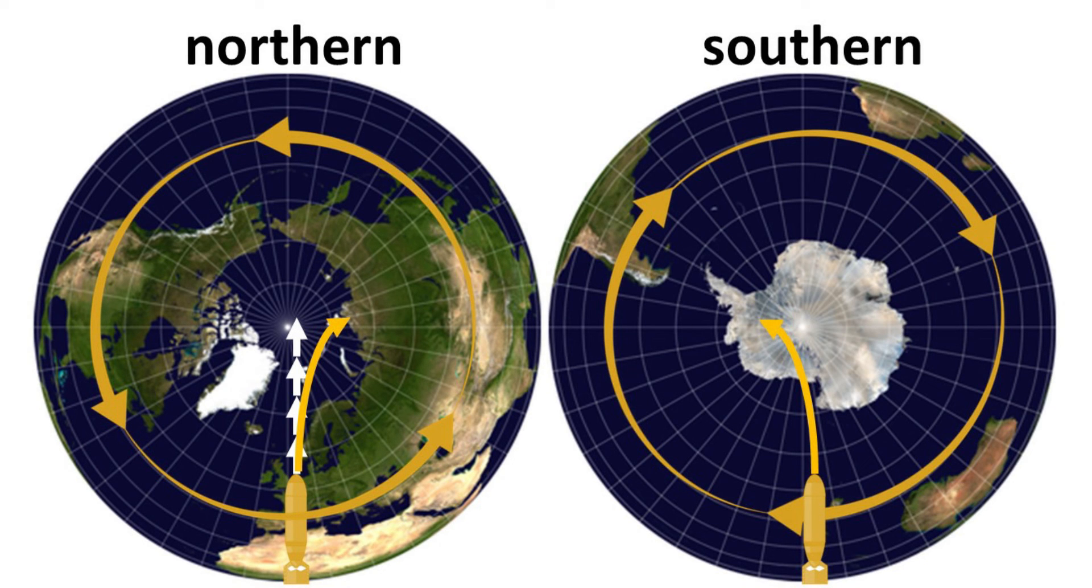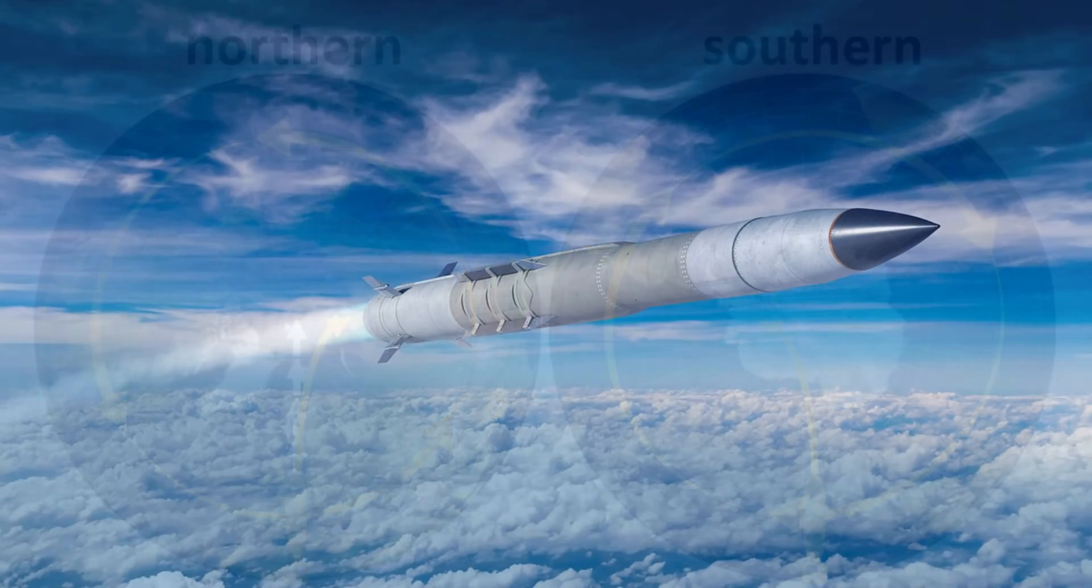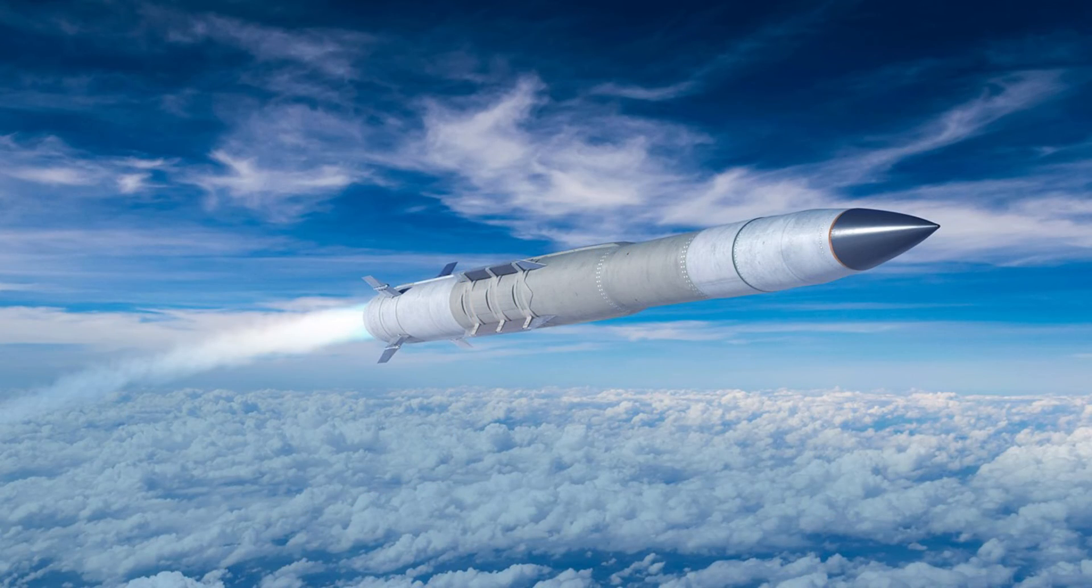For the southern hemisphere, since the Earth's rotation is clockwise, the deflection of the projectile fired towards the south pole will be to the left instead. Thus, for long-range missile systems or those with high velocities, failing to account for the Coriolis effect can lead to inaccuracies in targeting.